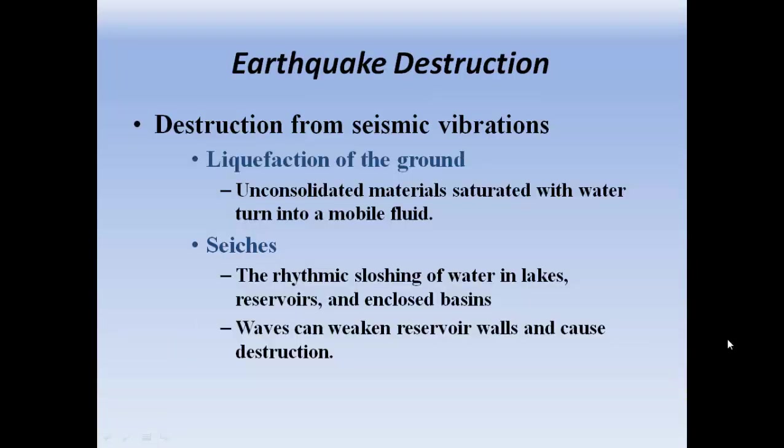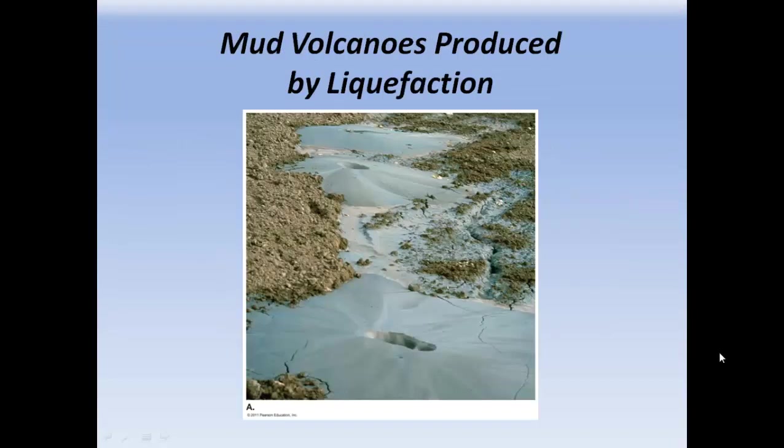Liquefaction of the ground: unconsolidated material saturated with water will turn into a mobile fluid. Seiches are the rhythmic sloshing of water in lakes, reservoirs, and enclosed basins — waves can weaken reservoir walls and cause destruction. Here are some mud volcanoes produced by liquefaction.